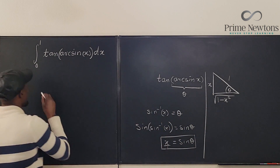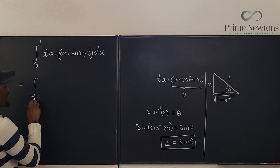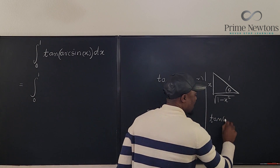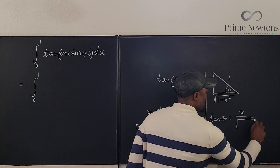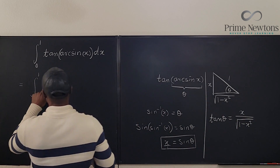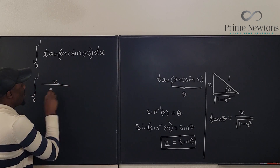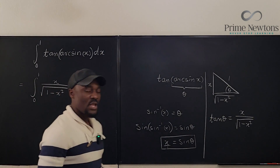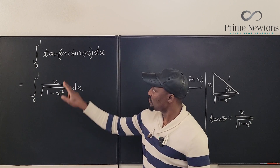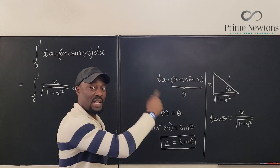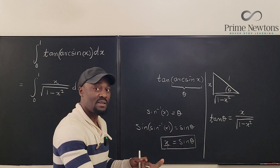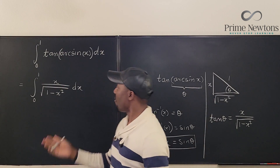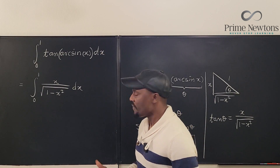So I can go back and say that the integrand from 0 to 1 of tan of arc sine of x is actually x over the square root of 1 minus x squared dx. This question could have been written that way, but it was written with arc sine so you can understand the relationship between angles, inverse trig functions, and x values. Now all we have to do is integrate this.